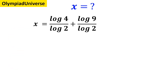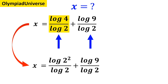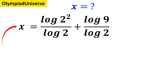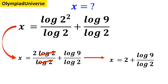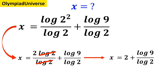As you can see on this screen, we have two fractions and we want to simplify each one as much as possible. Starting with the fraction highlighted in yellow, we can rewrite it as x equals log of 2 to the power of 2 over log of 2 plus log of 9 over log of 2, which simplifies to x equals 2 times log of 2 over log of 2 plus log of 9 over log of 2. The log of 2 terms cancel out and this simplifies to x equals 2 plus log of 9 over log of 2.